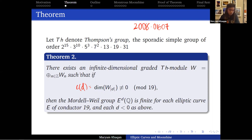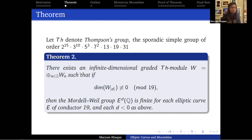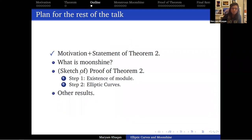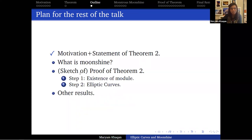The first part of the theorem — the existence of an infinite-dimensional graded Thompson module — is actually an example of moonshine for the Thompson group. I haven't told you what moonshine is yet, but I'm going to now. My plan for this talk: the first part gave motivation and stated the theorem; the second part will be the history of moonshine, for those who haven't heard of it; and the third part will be a sketch of the proof in two separate parts — the existence of the module, and then the connection to elliptic curves.